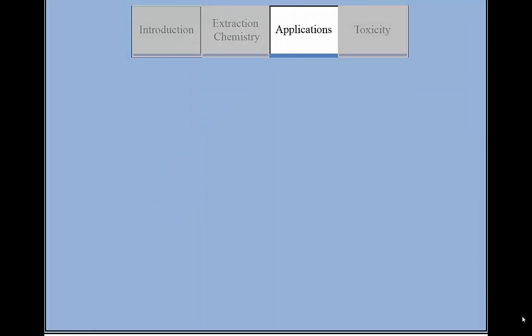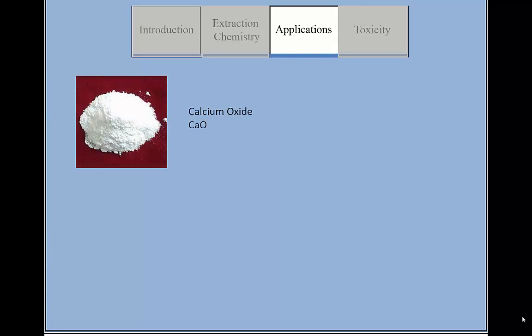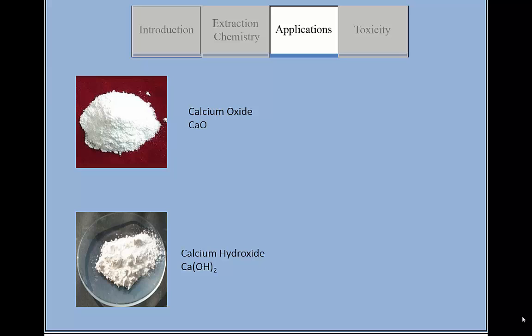Elemental calcium is less used than its common compounds. Limestone can be heated to form calcium oxide, which can be mixed with water to make cement. Calcium hydroxide is a commonly used alkaline substance for various industrial processes in order to reduce pH.